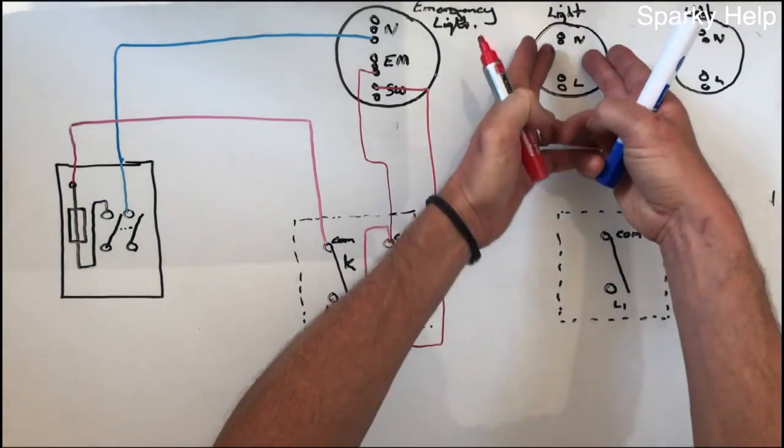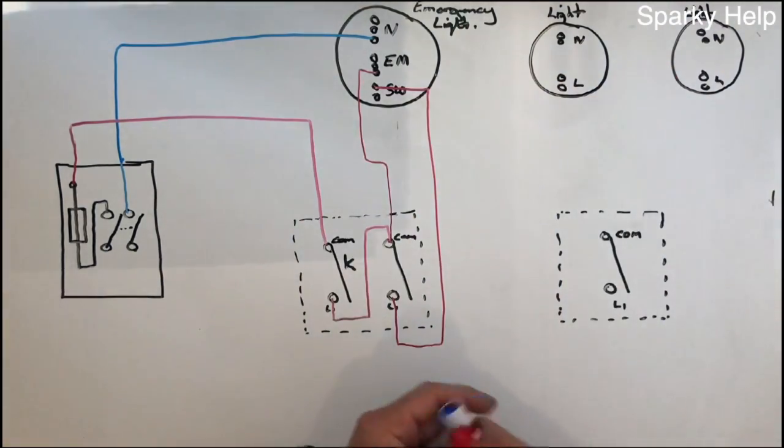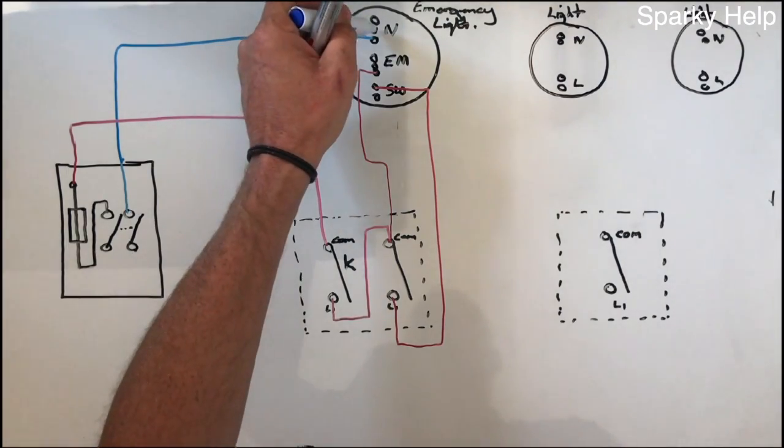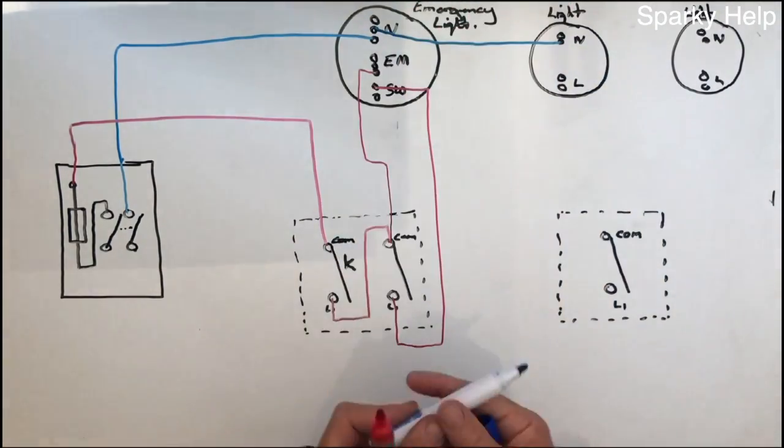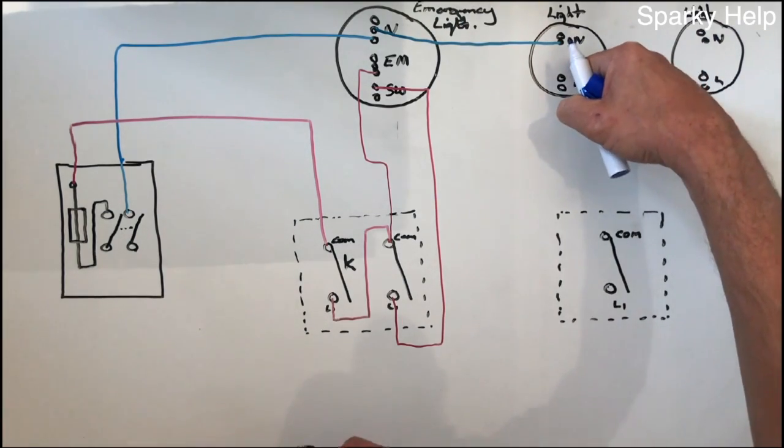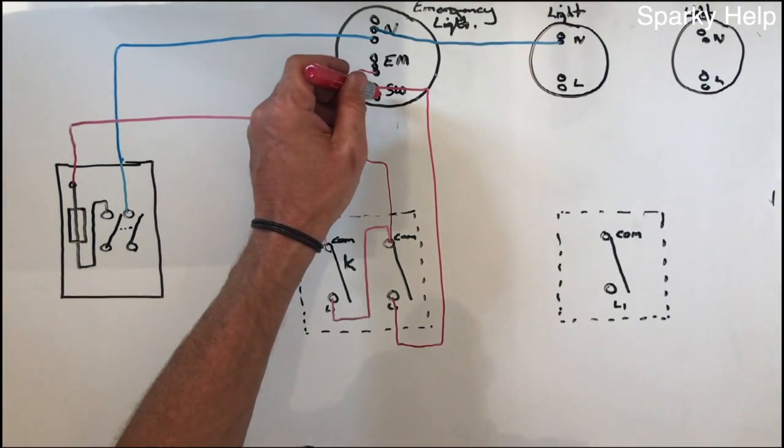Now we'll assume this light is in the same room as that, so we need power to run to those. So we'll take the neutral out of that to the next light. Well this is a non-emergency light, so we don't need the emergency feed. We just take the switch line to it.